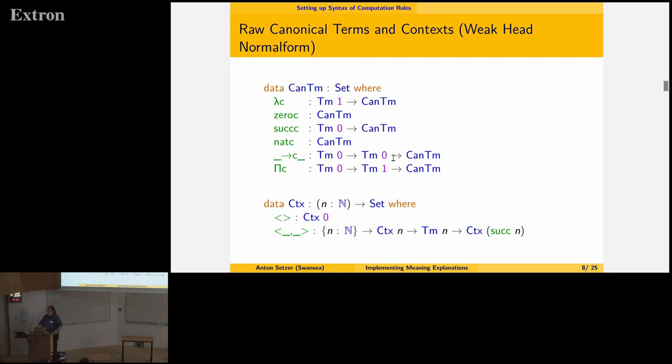And then we have what Pierre Martin-Löf calls canonical terms. So these are essentially terms, closed terms in weak-head normal form. You have lambda applied to any term with one free variable is a canonical term. You have zero is a canonical term. And successor is a canonical term if applied to a non-canonical term. That's what Pierre Martin-Löf explains quite in detail. For instance, successor of 2 plus 3 is a canonical natural number. And then we have natural numbers, et cetera.